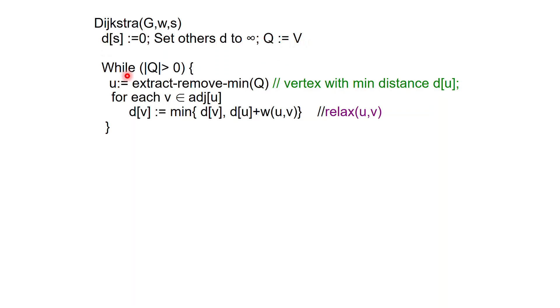And as long as the queue is not empty, we're going to extract the minimum from the queue and remove it from the queue, the vertex with minimum distance. And then we're going to relax all the neighbors of U. So for each V in the adjacency list of U, we're going to relax the edge UV by setting D[V] to the minimum of D[V] and D[U] plus the weight of the edge UV.